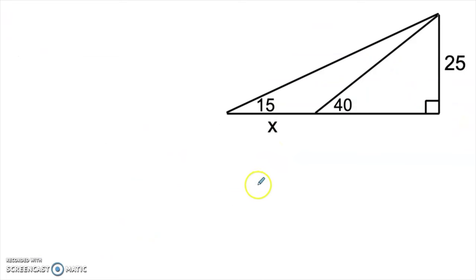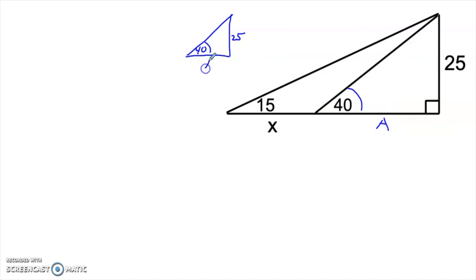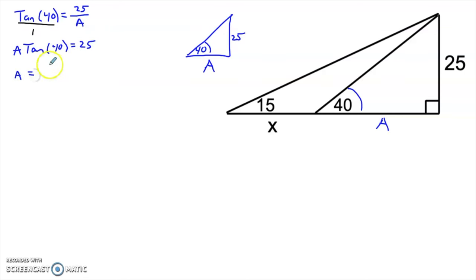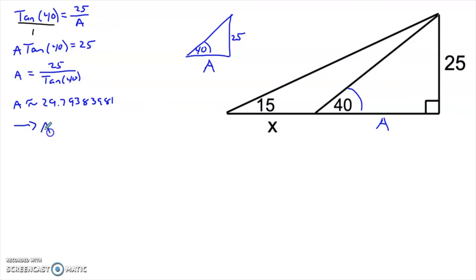Let's take a look at another one. The x we're looking for is not a part of a right triangle — that's going to make this an interesting problem. We can use this small triangle here to say the tangent of 40 is 25 over a, giving us a times tangent of 40 equals 25. So a equals 25 divided by tangent of 40, which gives us approximately 29.793. I'm going to store that in my calculator as the variable a so I'll have it for later.